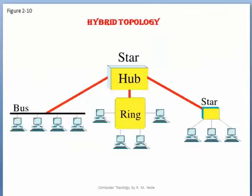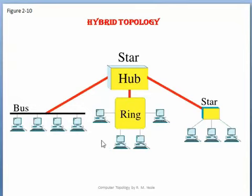Hybrid topology is the mix of two or more different types of topology. Consider this diagram — there are three labs: in the first lab, bus topology architecture is used; in the second lab, ring topology architecture is used; and in the third lab, star topology architecture is used. If these three labs are interconnected to each other, then it forms a hybrid topology.